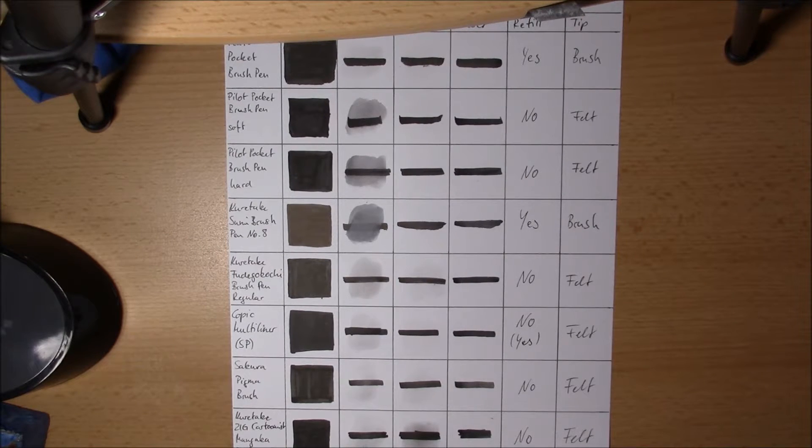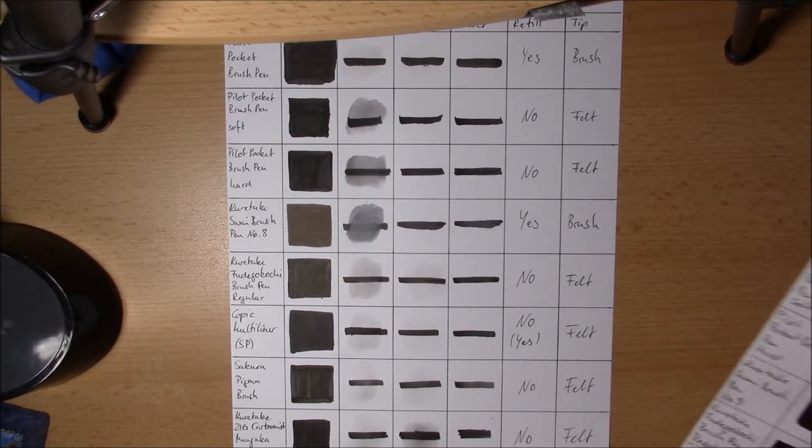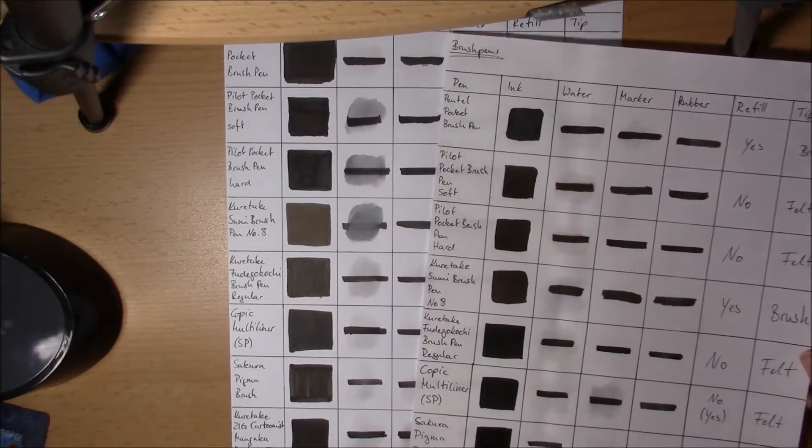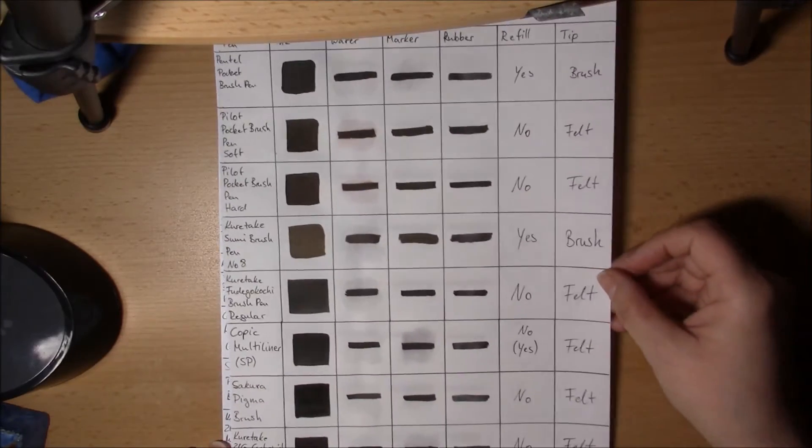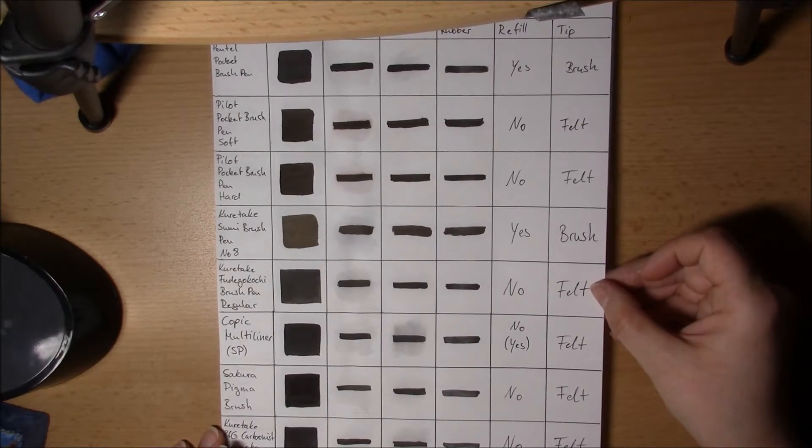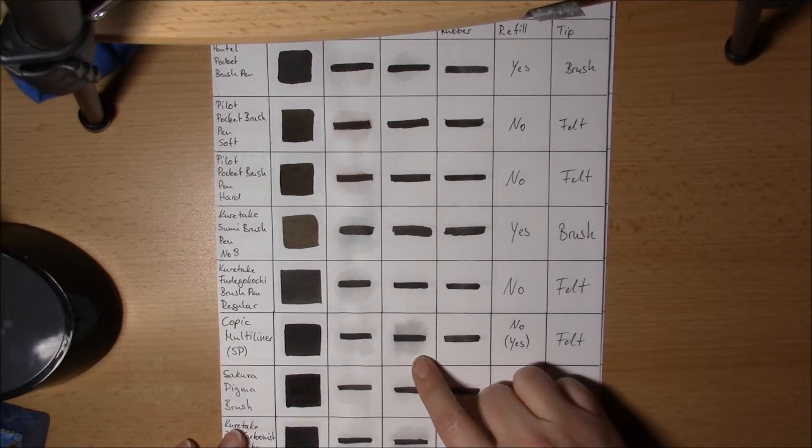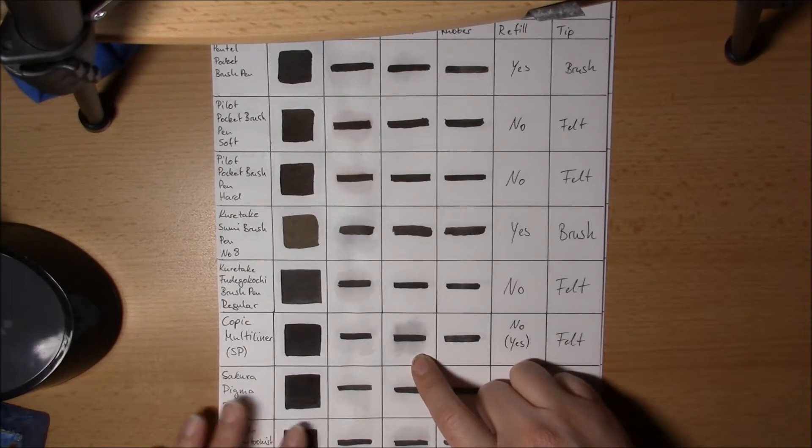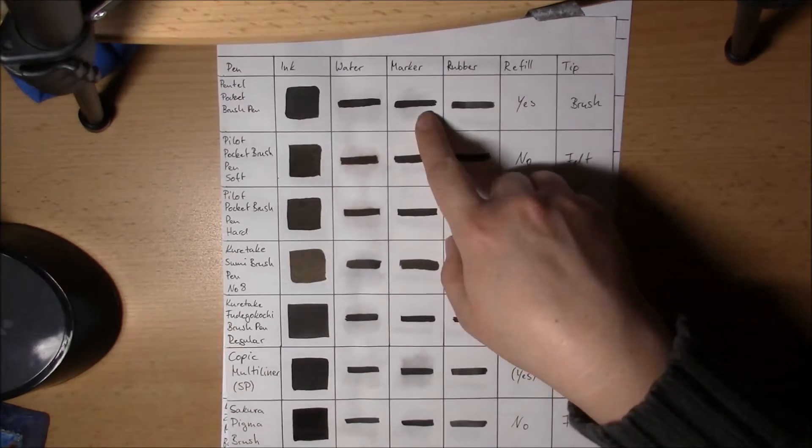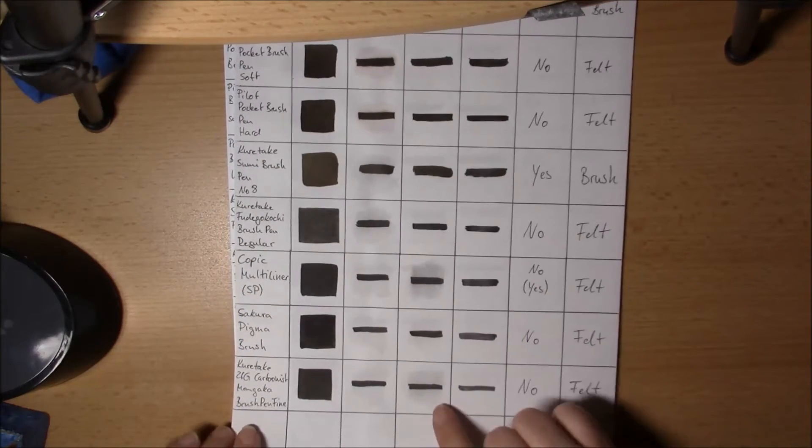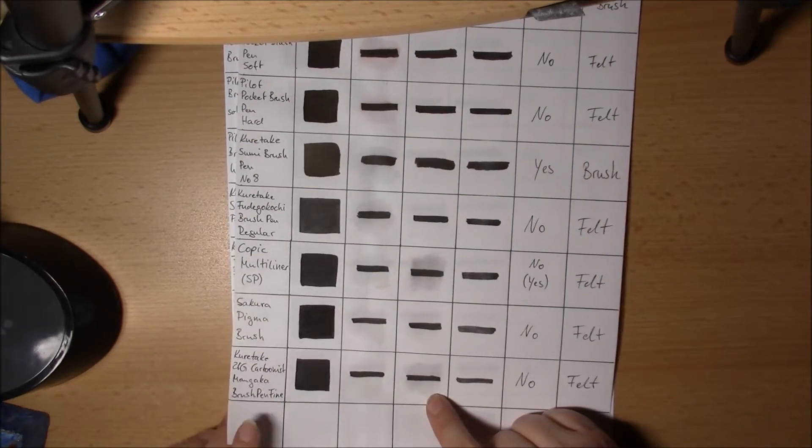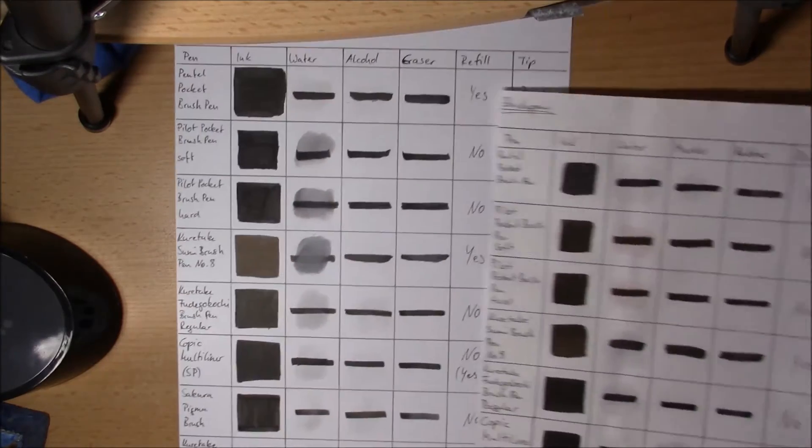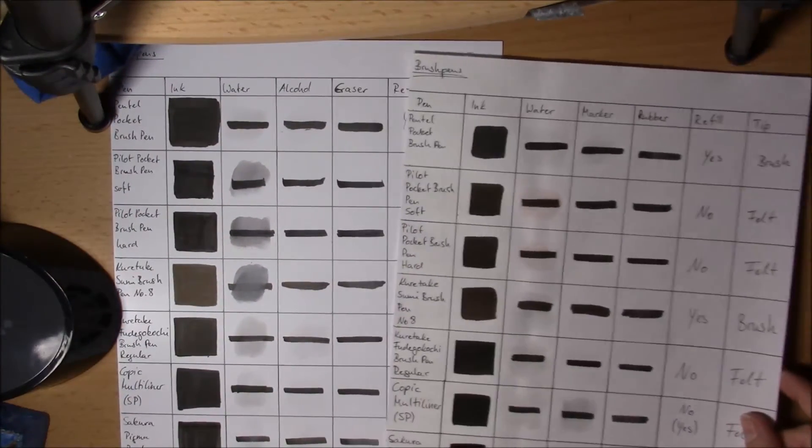I've also tried this on a different kind of paper. It was a bit more textured, and I've got different results. Especially in the Copic area, the Multiliners rubbed off, also the Pentel Pocket Brush Pen, and the Kuretake SIG Cartoonist pen was the same.